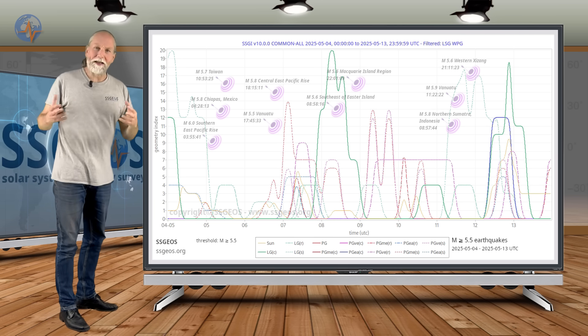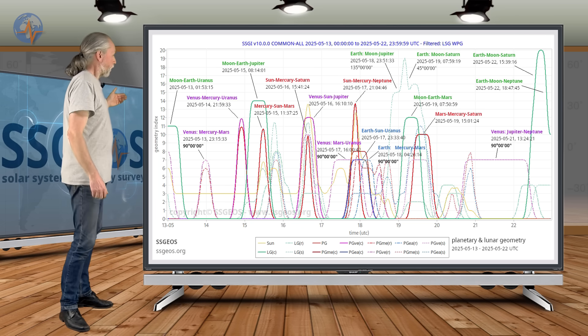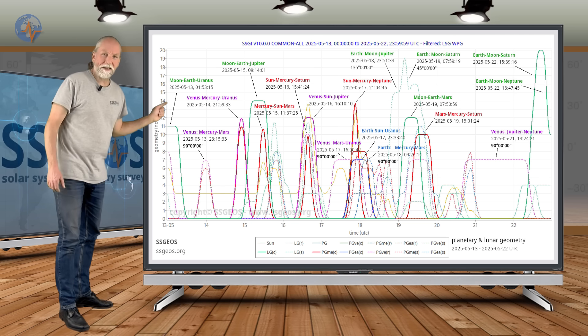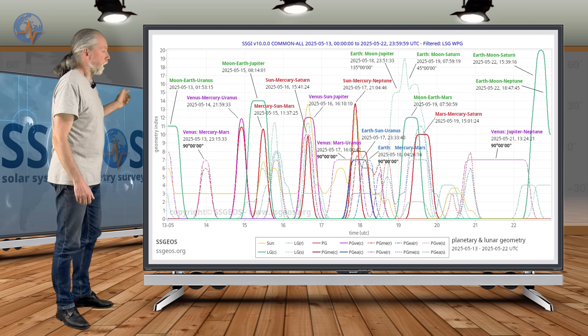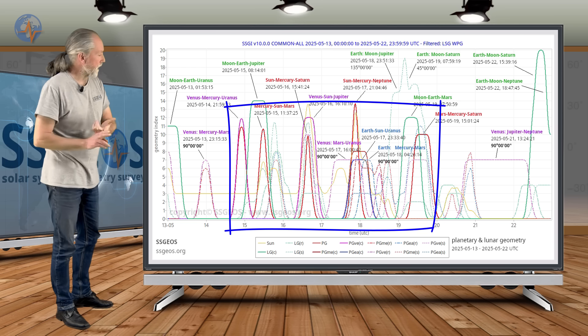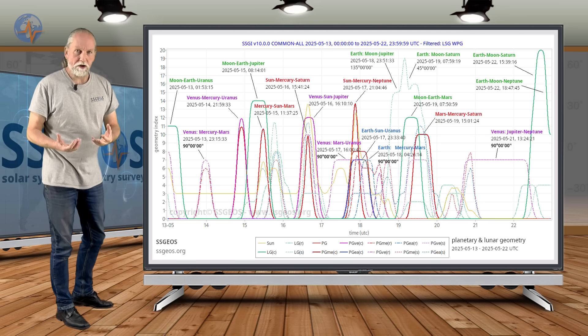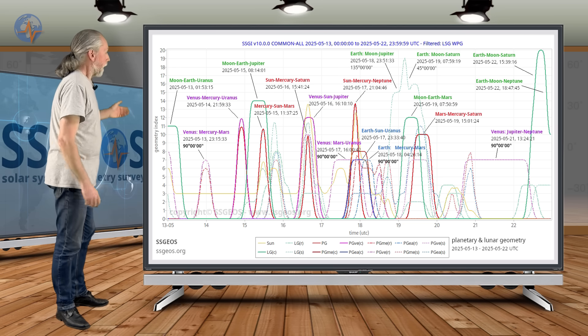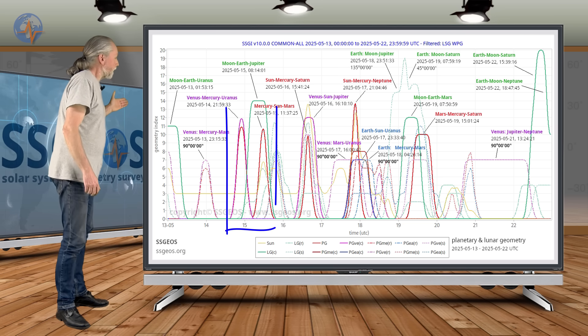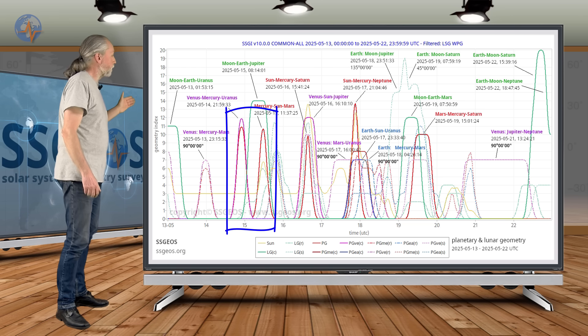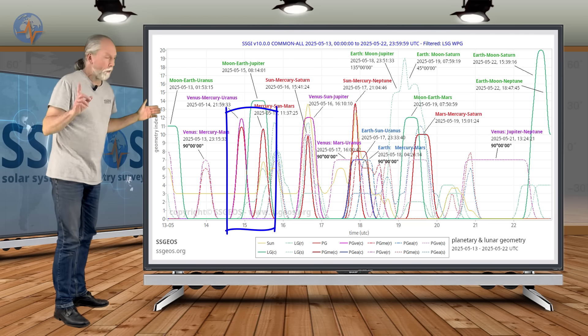Now let's have a look at the next time frame, from the 13th to the 22nd. What you see here is a lot of red and purple peaks. That's not a good sign. These are solid lines and that means conjunctions, and they are the most critical.